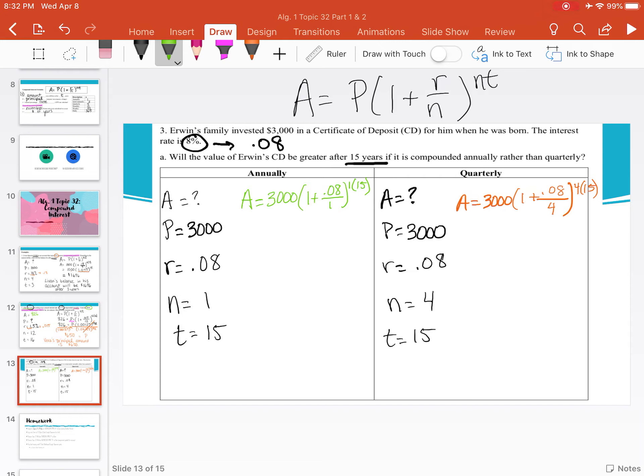So on the left hand side, I'm going to simplify. We will get 3000. Now 0.08 divided by 1 is just 0.08. So we can add 1 to that and get 1.08. And for my exponent, 1 times 15 is just 15.